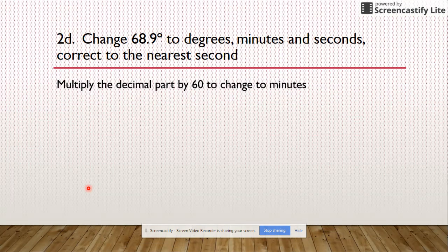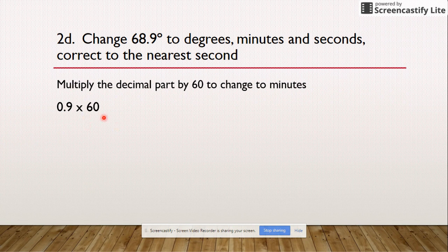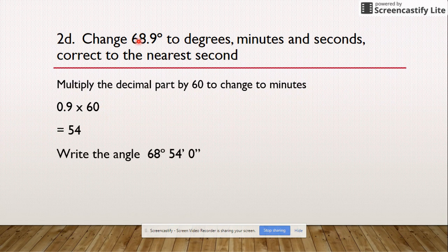Let's do 2d. Multiply the decimal part by 60, so we go 0.9 times 60, which will give us 54. Now we've got 69 degrees and we know we've got 54 minutes. We don't have any seconds because 54 was a flat number and it had no decimal.